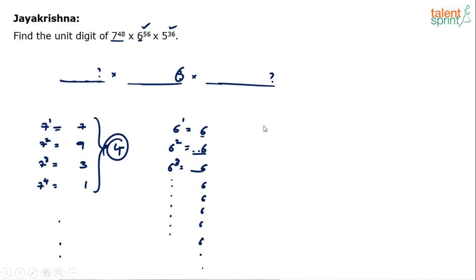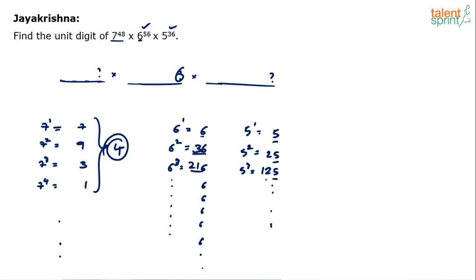Similarly, any power of 5 will also end with 5. 5^1 = 5, 5^2 = 25, 5^3 = 125, and so on — it always ends with 5. So 5^36 will also end with 5.